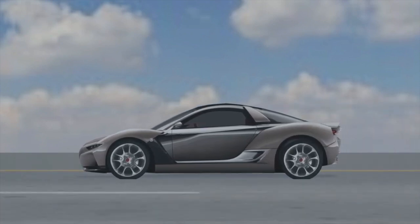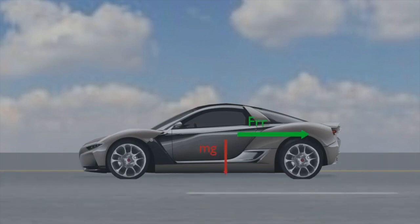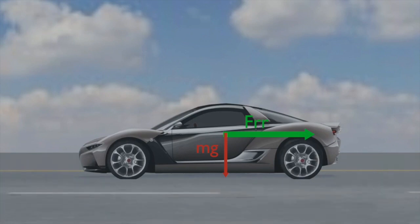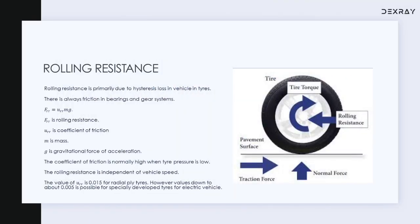We can see that the tire slides over the road surface — two surfaces are in contact and one surface is moving over the other, so a frictional force is induced between them. It opposes the forward motion of the vehicle. In the picture, we can see the mass acting downward from the center of gravity of the vehicle and the frictional force opposing the motion. This is what causes rolling resistance.